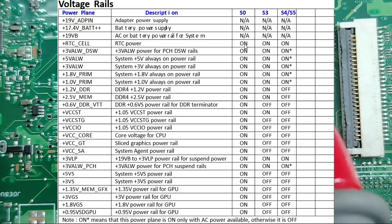When you see 'on' it means the voltage is present in that state; 'off' means the voltage is absent. The asterisk means this power plane is on only with the AC adapter — otherwise it's off. Please pay attention: never search for 3V always or 5V always when using just the battery. Some always-voltages and some primary voltages are only present when you insert the adapter.